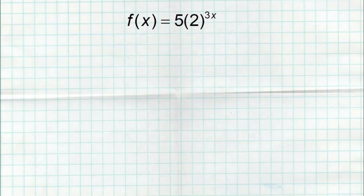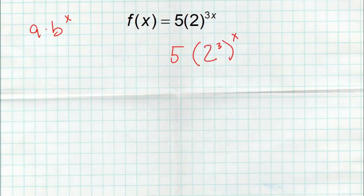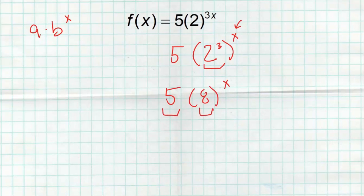Now let's talk about problems that have multiplication in the exponent — a different procedure. Many kids will use the same rule as before, but that's wrong. I want a times b to the x — I don't want 3x, I want just x. So I'm going to separate multiplication backwards using a double power: 5 times 2 to the 3x becomes 5 times (2 to the 3rd) raised to the x. Using the power rule in reverse: 2 to the 3rd to the x gives 3 times x = 3x. Now 2 to the 3rd is 8, so I get 5 times 8 raised to the x. My a value is 5, my b value is 8.